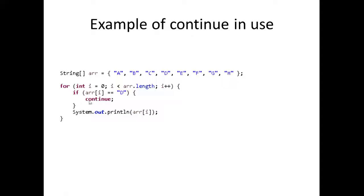If that element is equal to D, we're going to use the continue keyword. What this is going to do, as I said before, is jump to the next iteration of the loop, so it's basically just immediately jump to the next iteration of the loop.